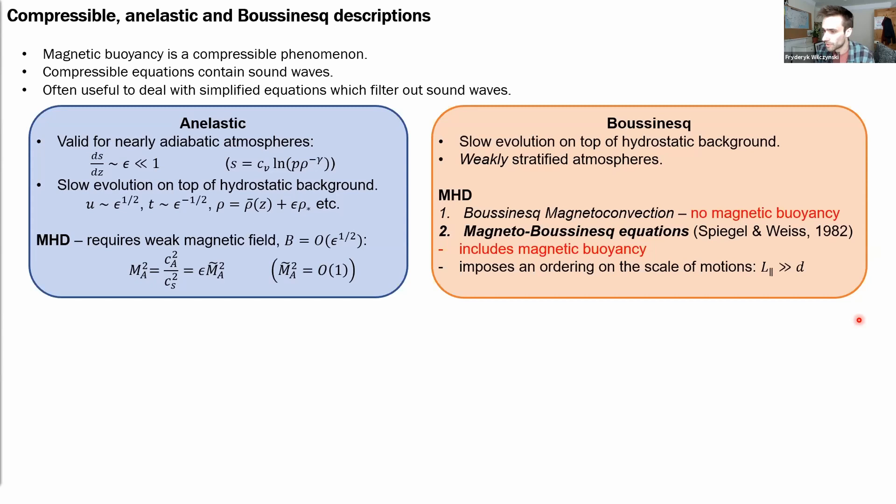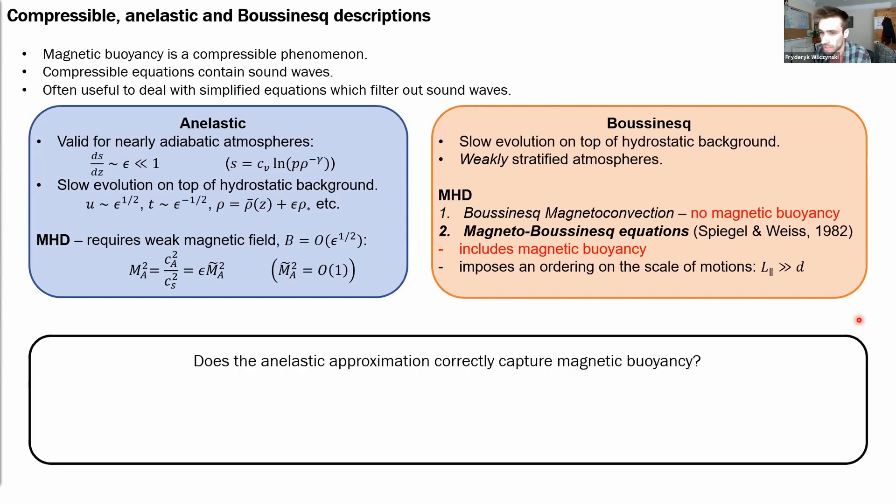when including the field in the anelastic approximation, one could ask whether the anelastic approximation correctly represents the phenomenon of magnetic buoyancy.